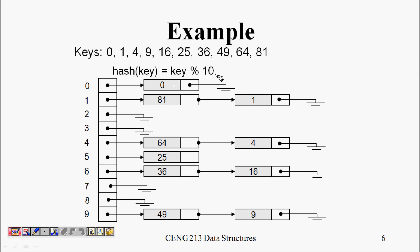Here is a concrete example using h(x) = x mod 10 with inputs 0 through 81. Starting: 0 mod 10 = 0, so key 0 goes to cell 0; 1 mod 10 = 1, so key 1 goes to cell 1.